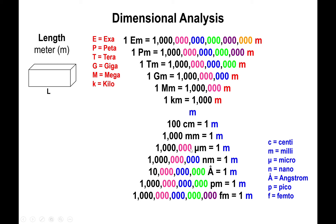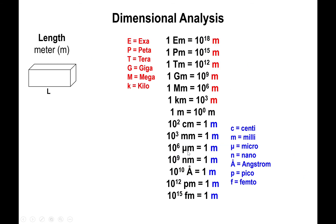So one megameter has 10 to the sixth meters, and 10 to the third millimeters equals one meter. You're basically on the hook for memorizing and remembering the conversions from tera all the way down to femto.